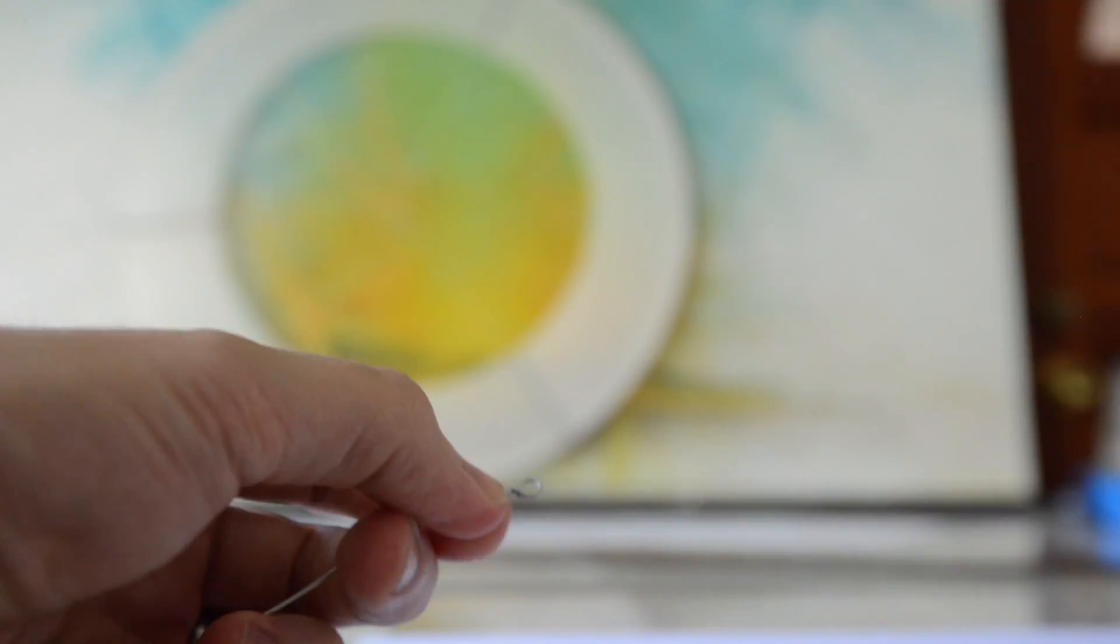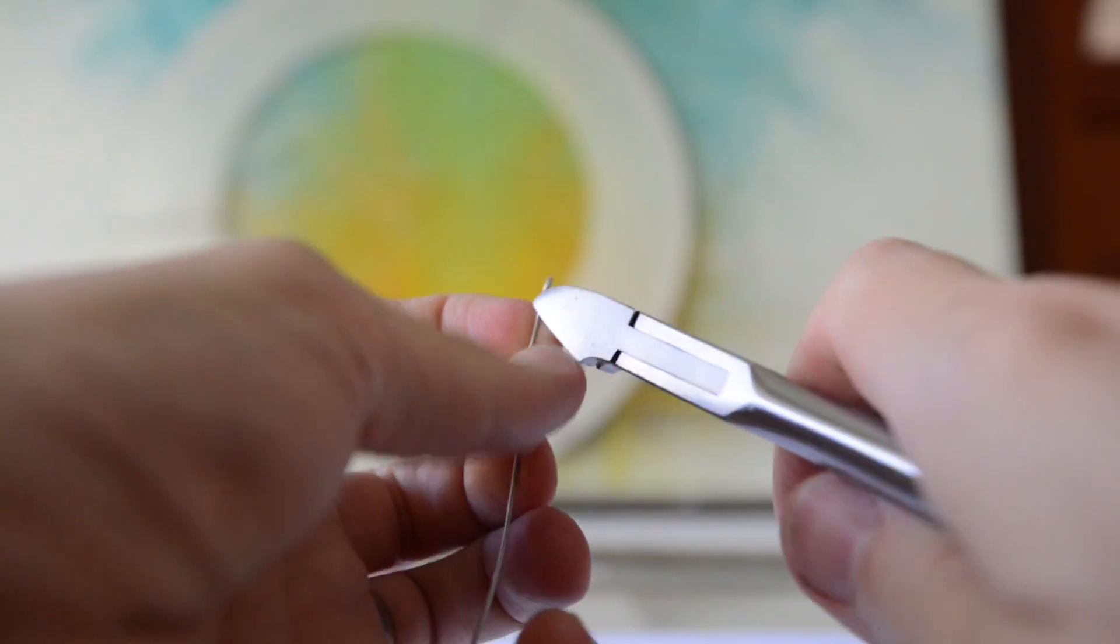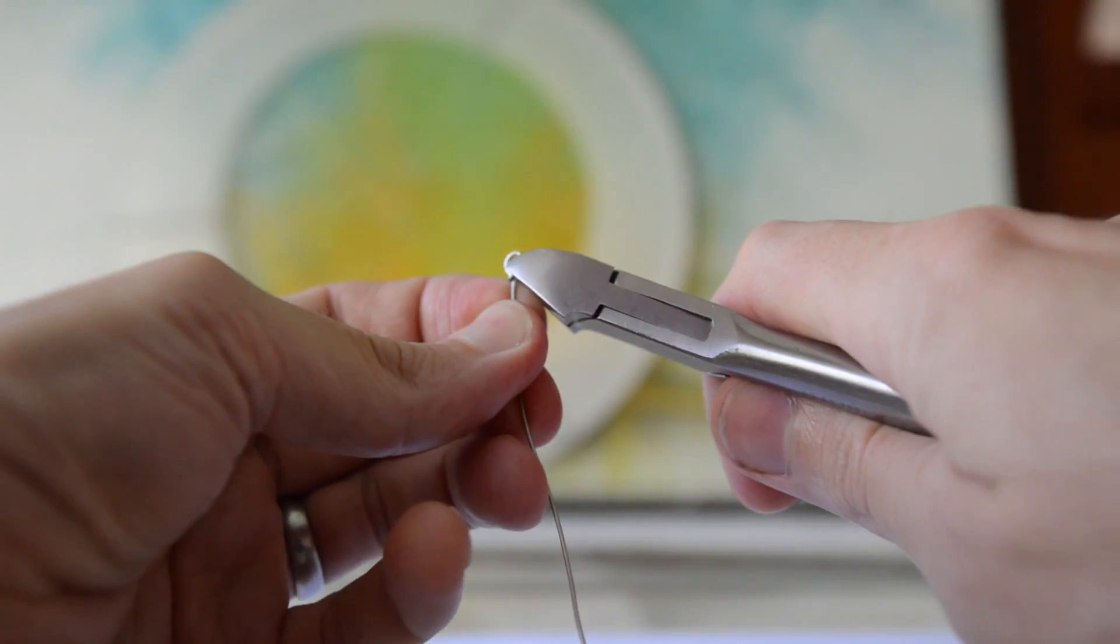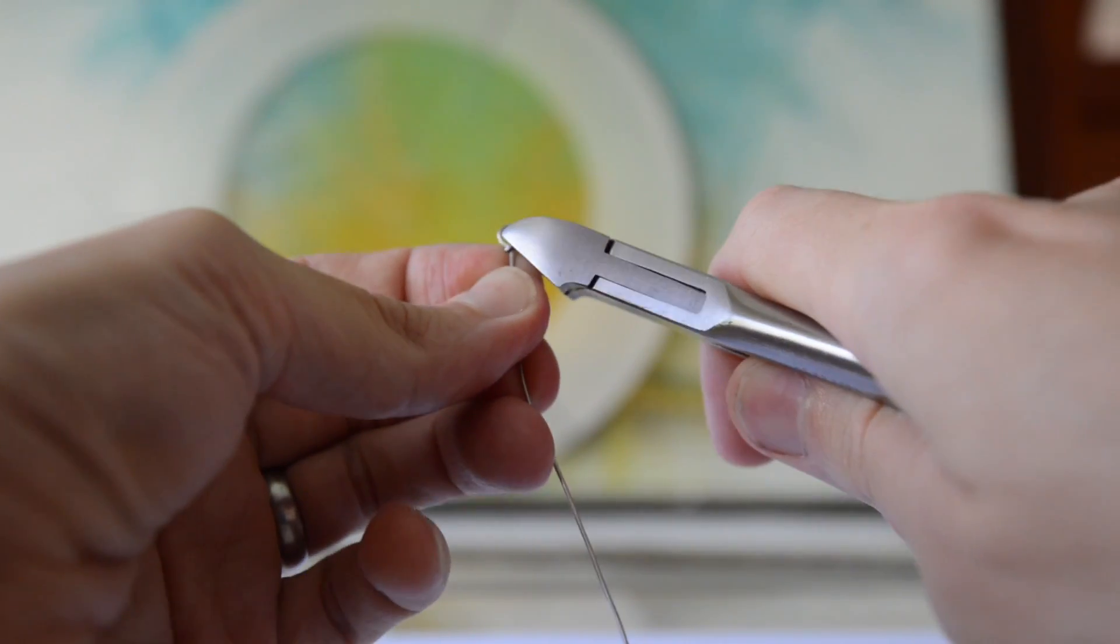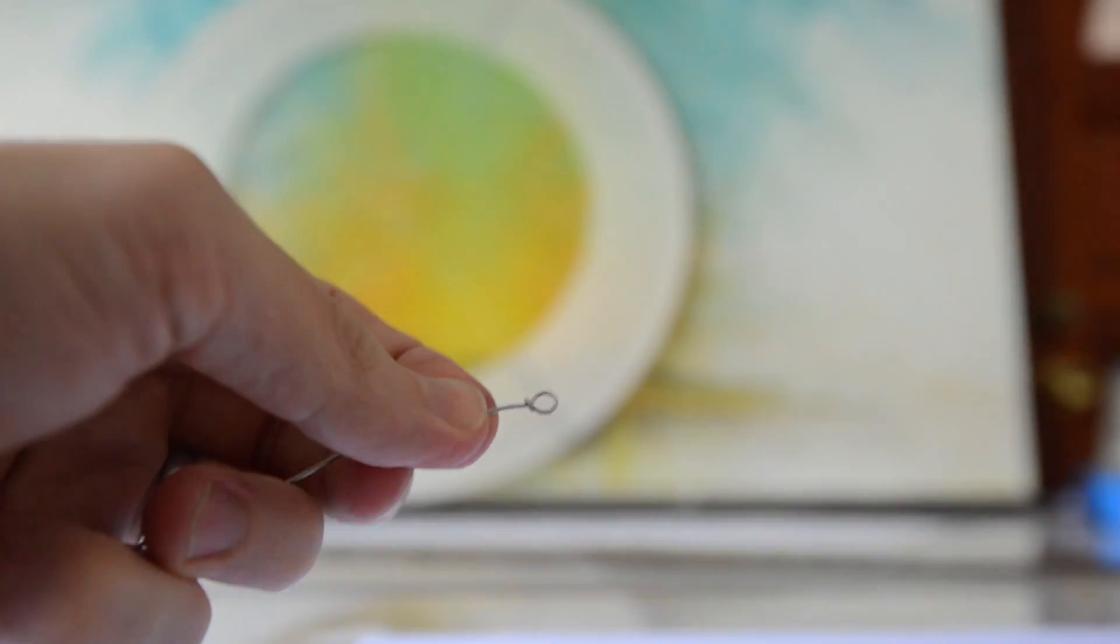Now what this does is it makes a nice little closed eyelet like that. Now we can take some wire cutters and close this initial hook down.